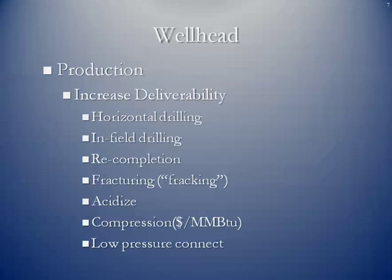For wells that start to decline, there can be a re-completion. That can mean going back in and doing something additional to the existing reservoir, or finding another reservoir — another layer, another producing zone — and completing that. Fracking is a form of initially releasing production and can be done multiple times if there's more to be released. Acid is another well completion method — an older approach instead of fracturing. If a well is in decline, a producer and operator may agree to use acid to free it up, which works mainly in sand formations.